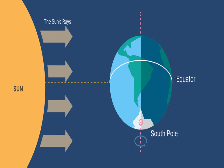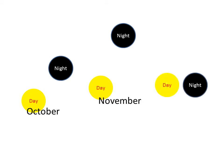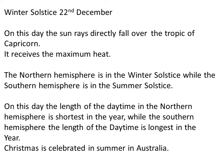Let's get back to our topic — we were at 23rd September. From 23rd September onwards, again very slowly, days will become short and nights will become longer. It will continue through October, November, and December. Then again in December, there comes a day when day is minimum and night is maximum. So on 22nd December, the daytime in the northern hemisphere is the shortest day, while in the southern hemisphere it is the longest day of the year. That is why Christmas is celebrated in summer in Australia, because Australia is in the southern hemisphere.